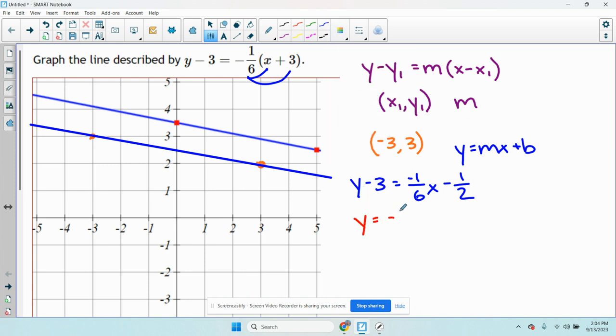So we have y equals negative 1 sixth x. Negative 1 half plus 3 is going to be positive 5 halfs or 2.5.